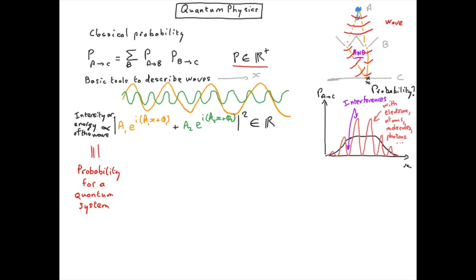That means that we also need to introduce an amplitude of probability which is the equivalent of the amplitude for the wave, and which we will treat as a complex number.